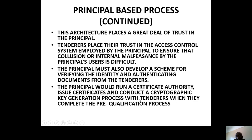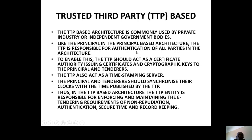The architecture places a great deal of trust in the principal — it must be a trusted partner. Tenderers place their trust in the access control system employed by the principal to ensure that collusion or internal malfeasance by the principal is difficult. The principal must develop a scheme for verifying identity and authenticating documents from tenderers, running a certificate authority, issuing certificates, and conducting key generation when tenderers complete the pre-qualification process.